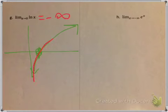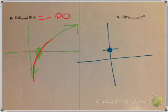Next: e to the x. Quick sketch — it crosses the y-axis at 1 and increases. The limit as x approaches negative infinity, meaning getting smaller and smaller to the left: what's the graph approaching? Well, 0. So my answer is 0.